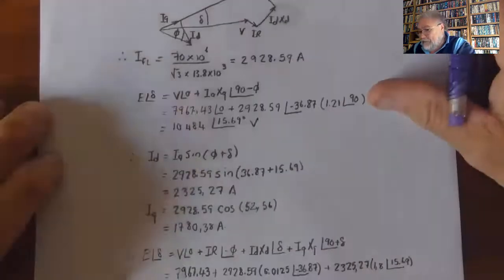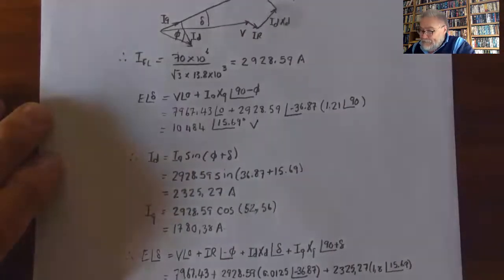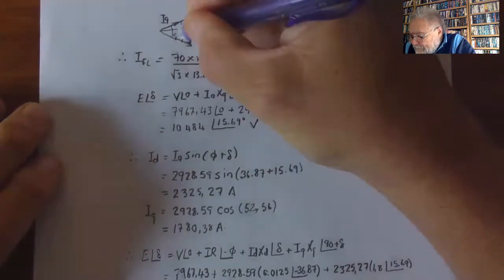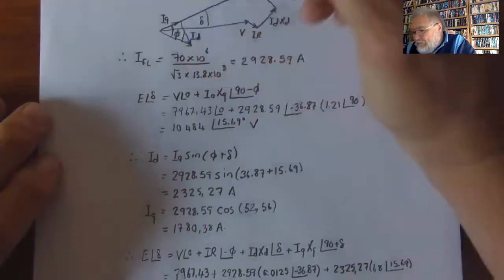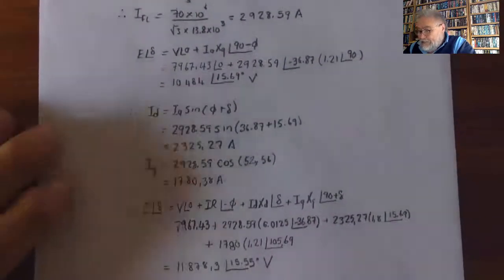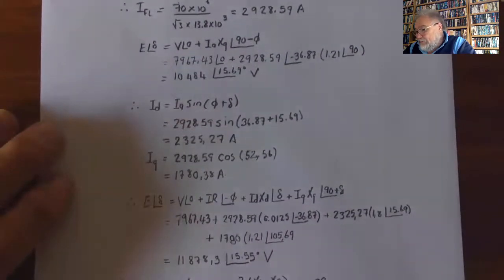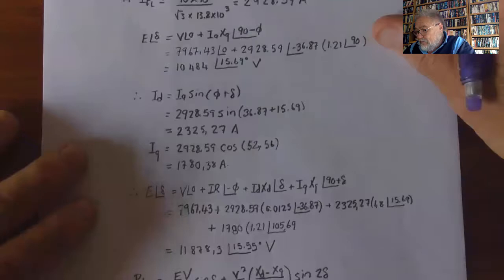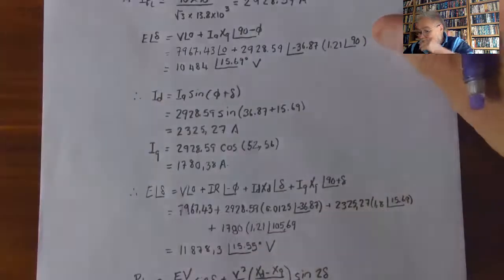Id = Ia·sin(φ + δ) — we are looking at the sum of angles δ and φ — giving Id = 2325.27 A and Iq = 1780.38 A.